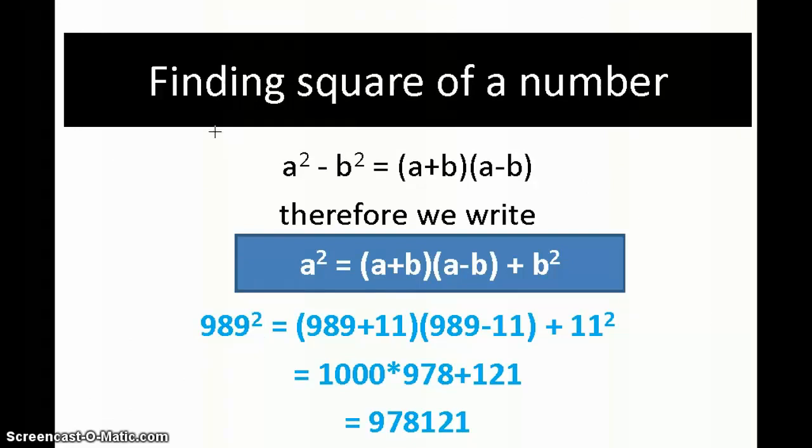It's the same simple trick, you'll be amazed to see this. We know a² - b² = (a+b)(a-b). Therefore we can write a² = (a+b)(a-b) + b². The same principle you are applying. Just check out the example: 989 squared. I can write it in the above form as (989+11)(989-11) + 11².